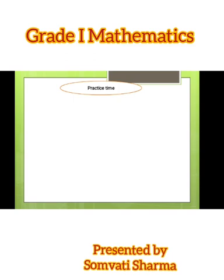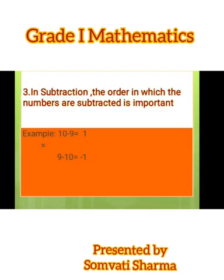For example, you can see here 10 minus 9 is 1. But if we will change this order to 9 minus 10, then that is not equal because here the answer is 1 and here is minus 1. So we can say the order is very important in subtraction because otherwise the answer will be different. It will change.